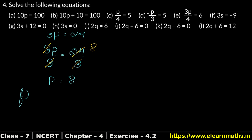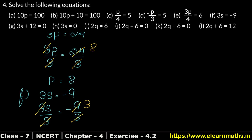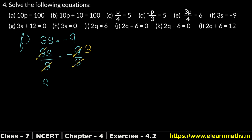Let's do Part F now. Part F is: 3s equals minus 9. Since s is multiplied by 3, we divide both sides by 3. We get 3s divided by 3, and minus 9 divided by 3. The 3s cancel, and minus 9 divided by 3 gives minus 3. So s equals minus 3 is the answer.